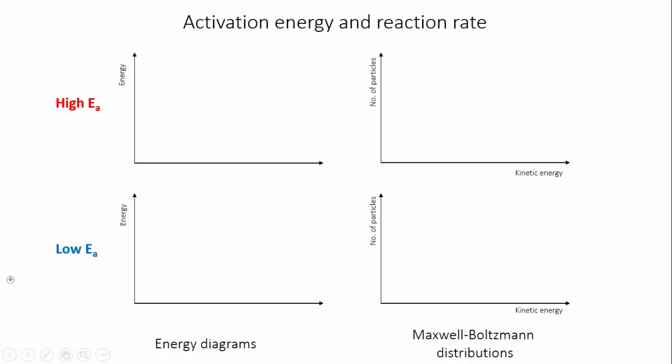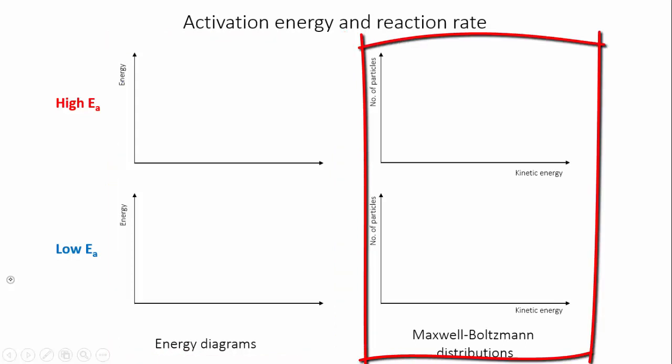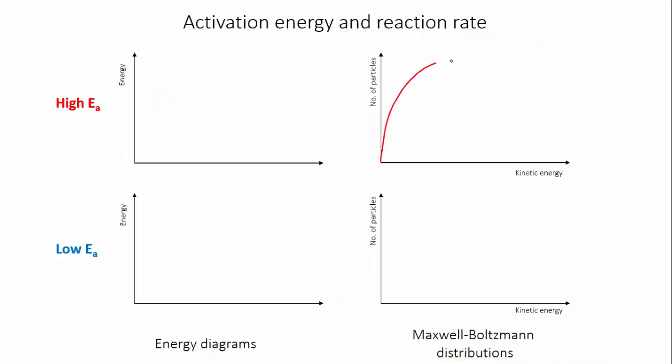So let's think about reactions with high and low activation energies and what that means. Imagine two identical flasks of some reactant sitting on the lab bench. I'm going to draw an energy diagram on the left, and a Maxwell-Boltzmann diagram on the right for each of them. The two flasks are at the same temperature, so they must have identical Maxwell-Boltzmann distributions.